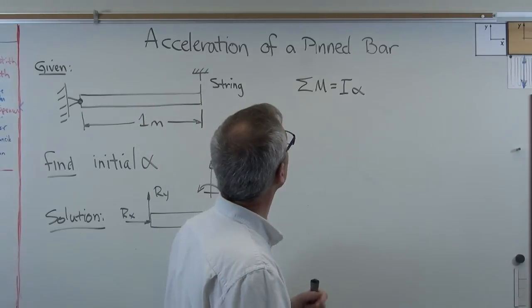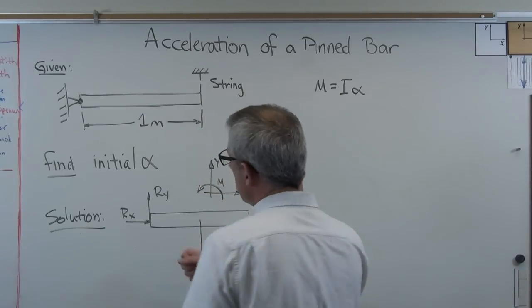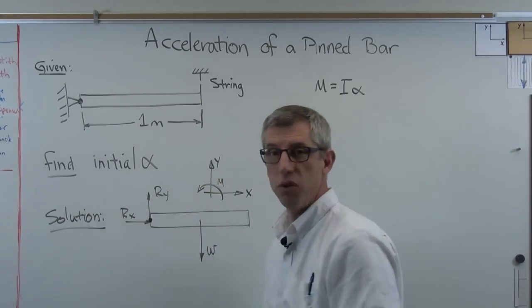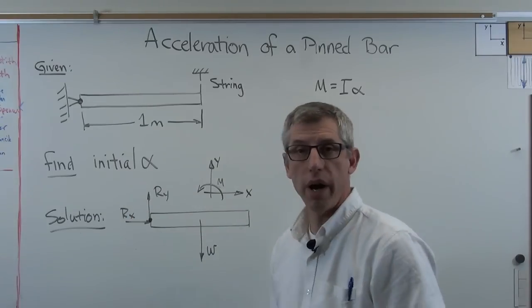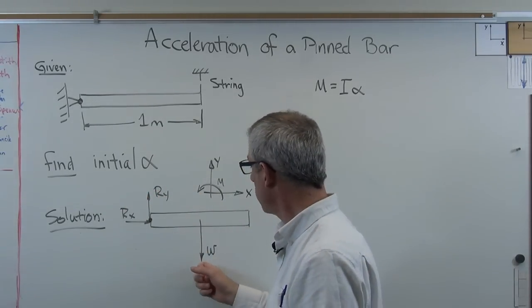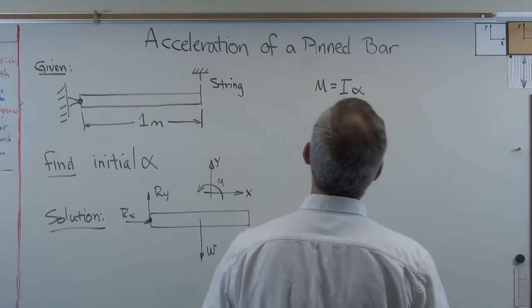Well, I don't have to put the summation there, because there's really only one moment. I'm going to sum the moment about the pivot point right there. If I do that, Rx and Ry don't have any moment arm, and so those drop out. The only thing I wind up having to account for is the weight.